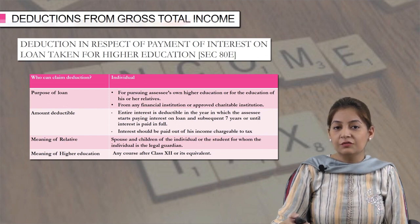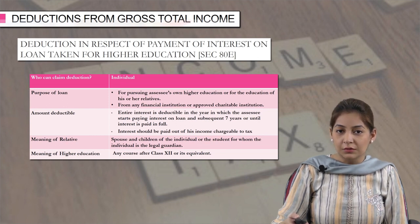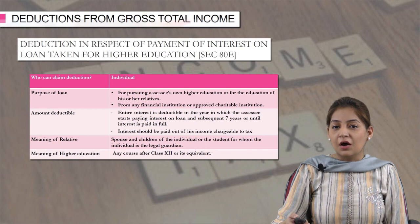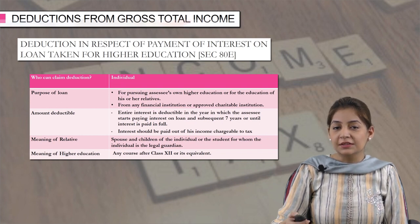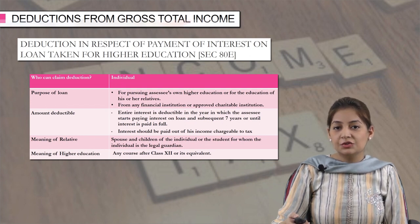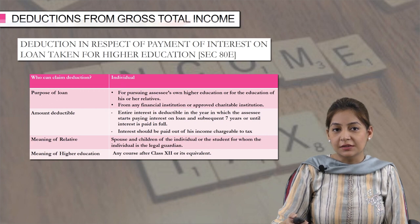If you have taken any loan for the assessee's own education, or for his or her spouse, children, or for whom the assessee is the legal guardian, the interest deduction can be claimed under this section. The loan can be taken from any financial institution or any approved charitable institution.